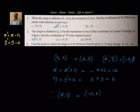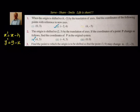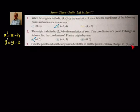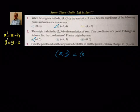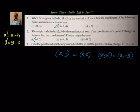Now for the third question: find the point to which the origin should be shifted so that the point (3, 0) may change to (2, -3). So (3, 0) is x, y and (2, -3) is x-dash, y-dash. We have to find h, k. We write down x, y is (3, 0) and x-dash, y-dash is equal to (2, -3).